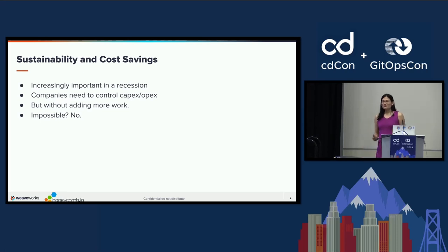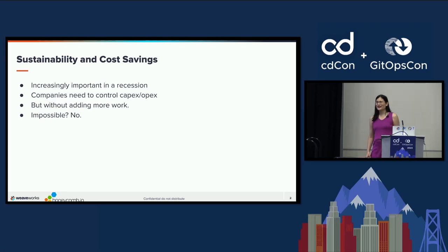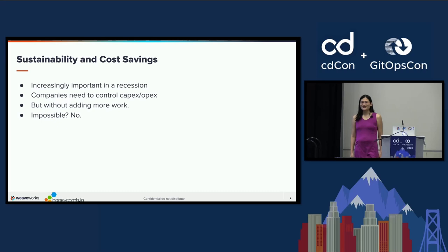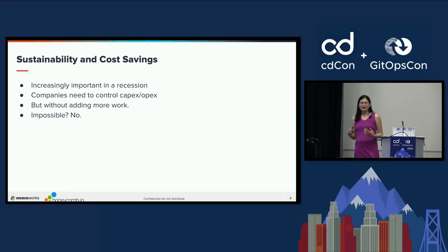This may seem like we're trying to get everything all at once — more work out of people, decreased cost — and this may seem impossible. But the answer is yes, you can actually have it all. Here's the recipe for how Honeycomb did this, and in a moment Tom Oh will be telling us how you can apply this in your own environments with a lot less work than we went through.